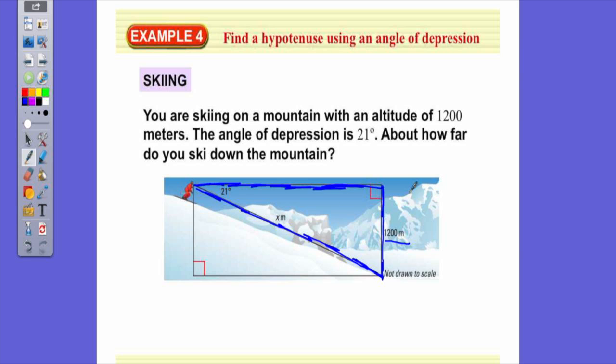And this is 1,200 meters. So 1,200 meters represents the leg opposite or the leg adjacent to the 21-degree angle? Opposite. So we have a 21-degree angle. The side opposite it is 1,200.